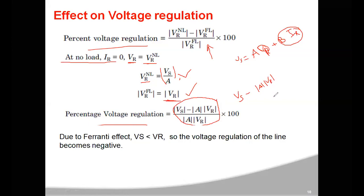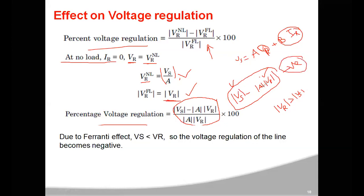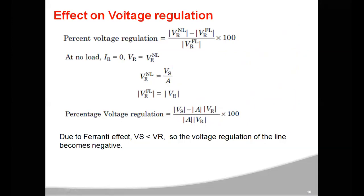If there is a Ferranti effect, the magnitude of VR is greater than the magnitude of VS. That means VS is small compared to A·VR, making the numerator VS − A·VR negative. So when there is a Ferranti effect, the voltage regulation of the transmission line becomes negative. The power factor will also be leading, because there is capacitance domination under no load condition.